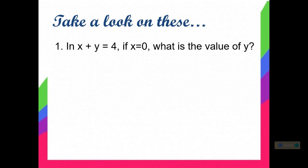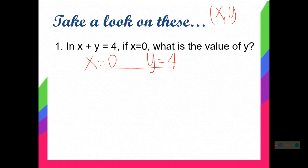In x plus y equals 4, if x is equal to 0, what is the value of y? So if you are going to solve this, if your x is equal to 0, what is the value of your y? You will get 4. And if you are going to make this ordered pair, since we have the ordered pair in the form (x, y), so you will have 0, 4.